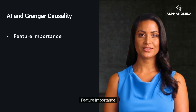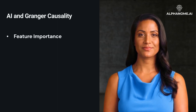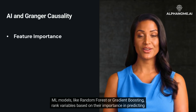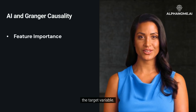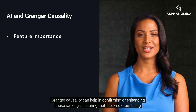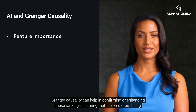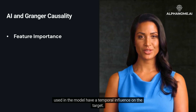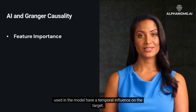Feature Importance: ML models, like random forest or gradient boosting, rank variables based on their importance in predicting the target variable. Granger Causality can help in confirming or enhancing these rankings, ensuring that the predictors being used in the model have a temporal influence on the target.